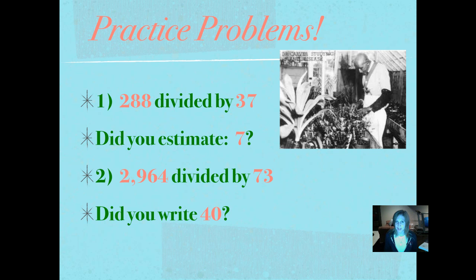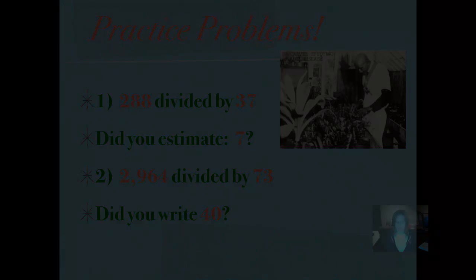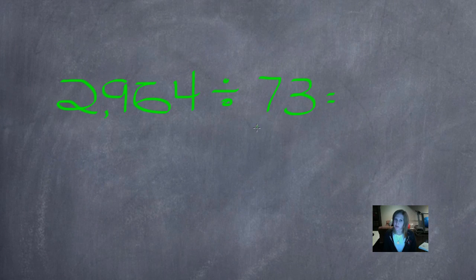Did you write 40? Let's see how we worked that. So we're going to round our divisor to the greatest place value position, and 73 rounded is 70 because 73 is closer to 70 than 80.